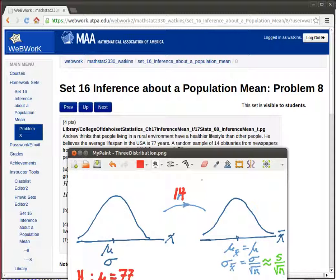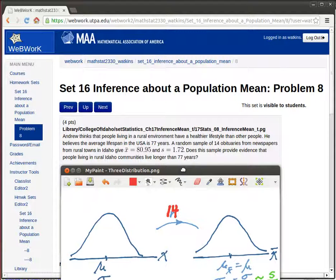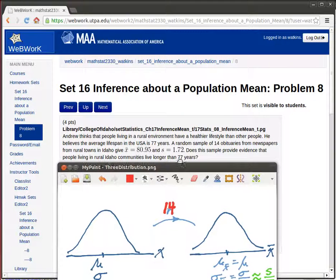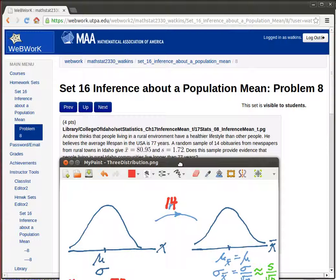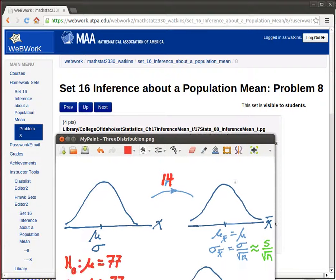So our sample size is N equals 14. And these folks in Idaho, the average of those 14 was 80.95. So up here somewhere is that average X bar is 80.95.